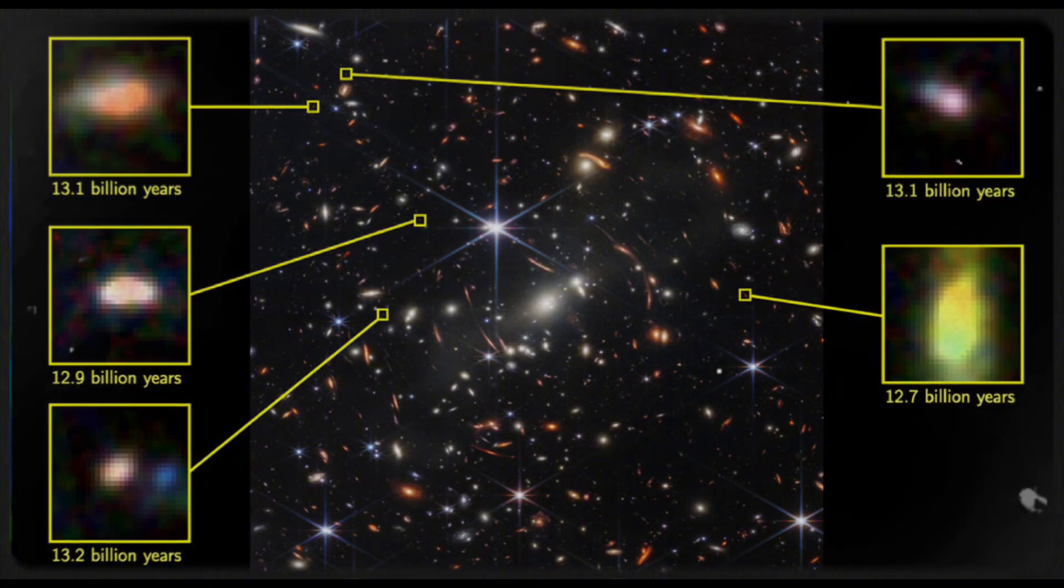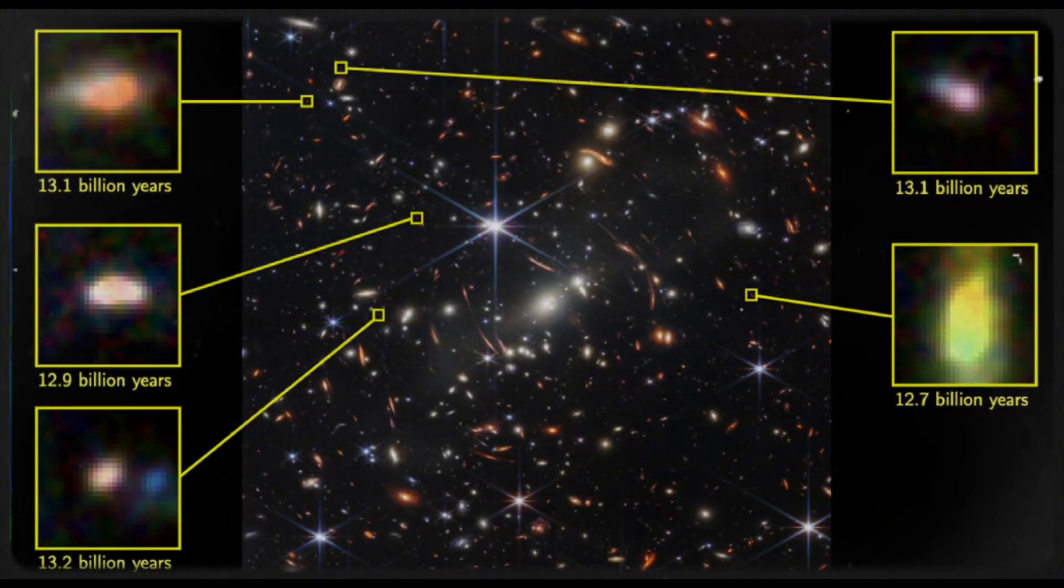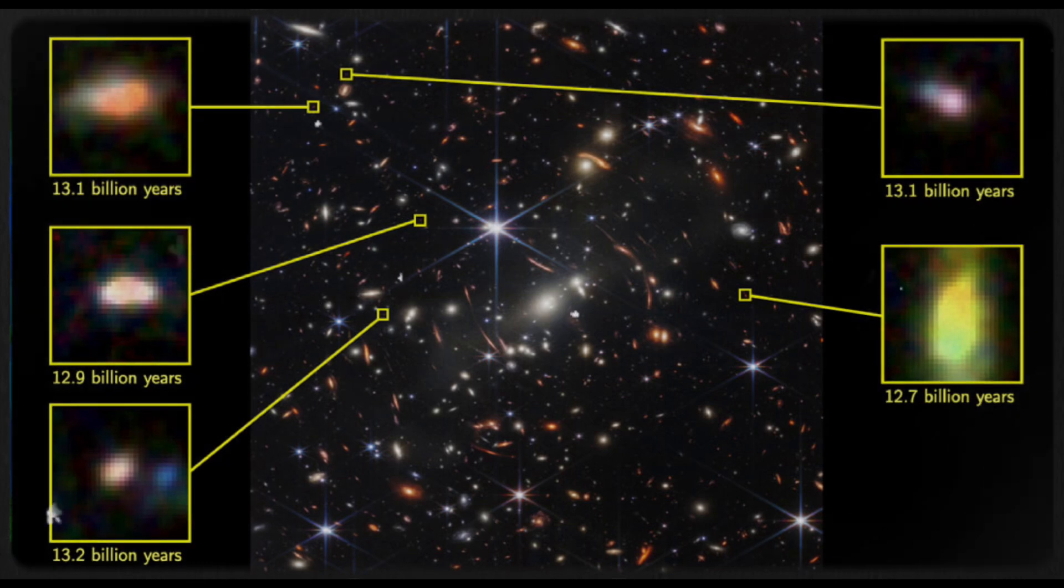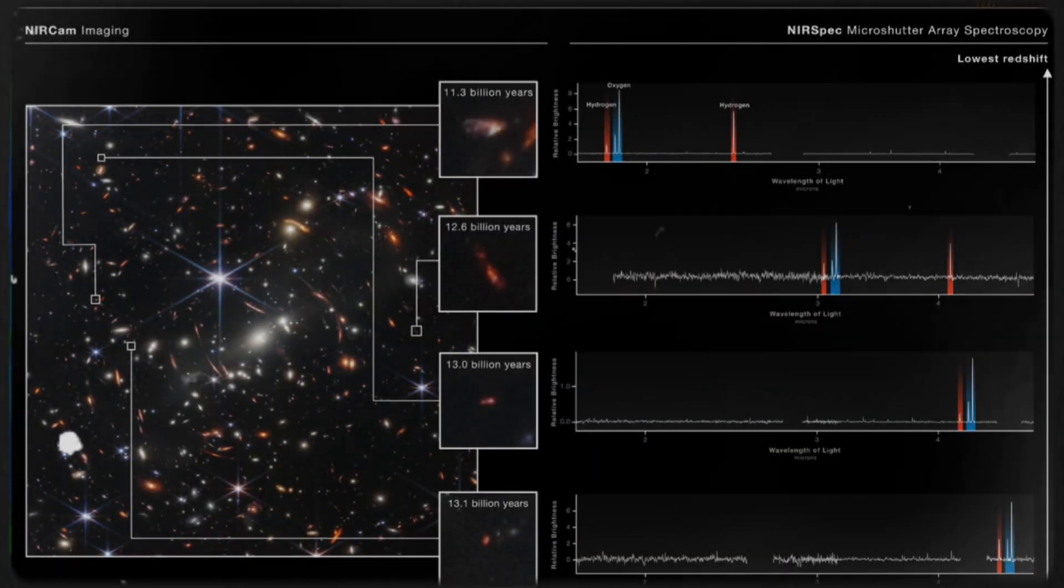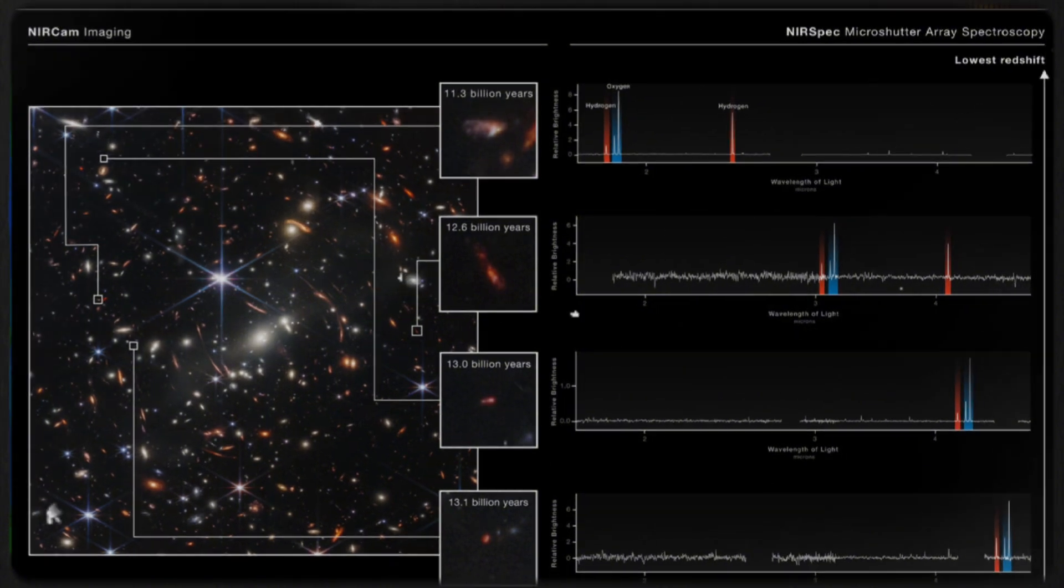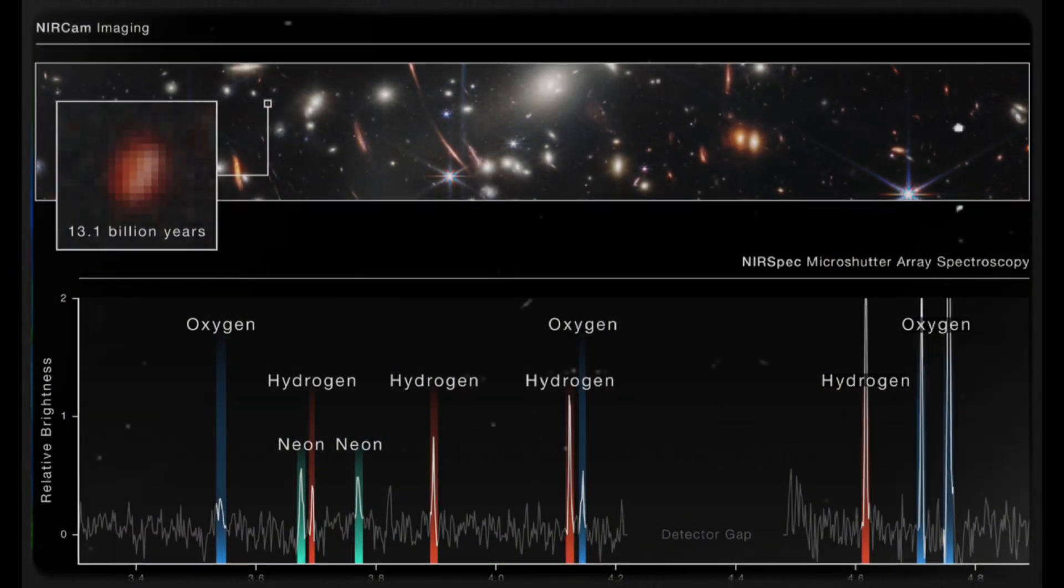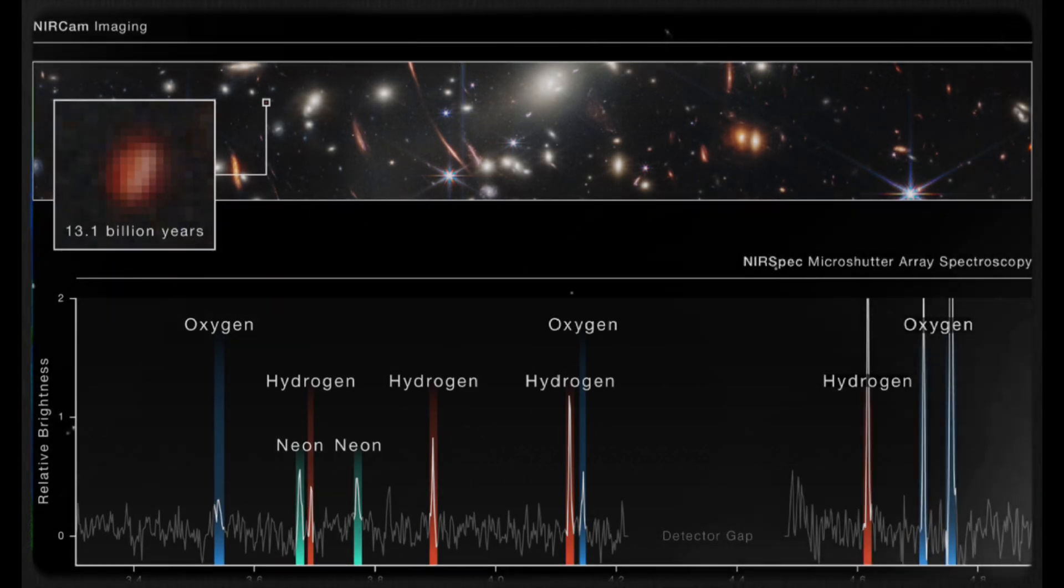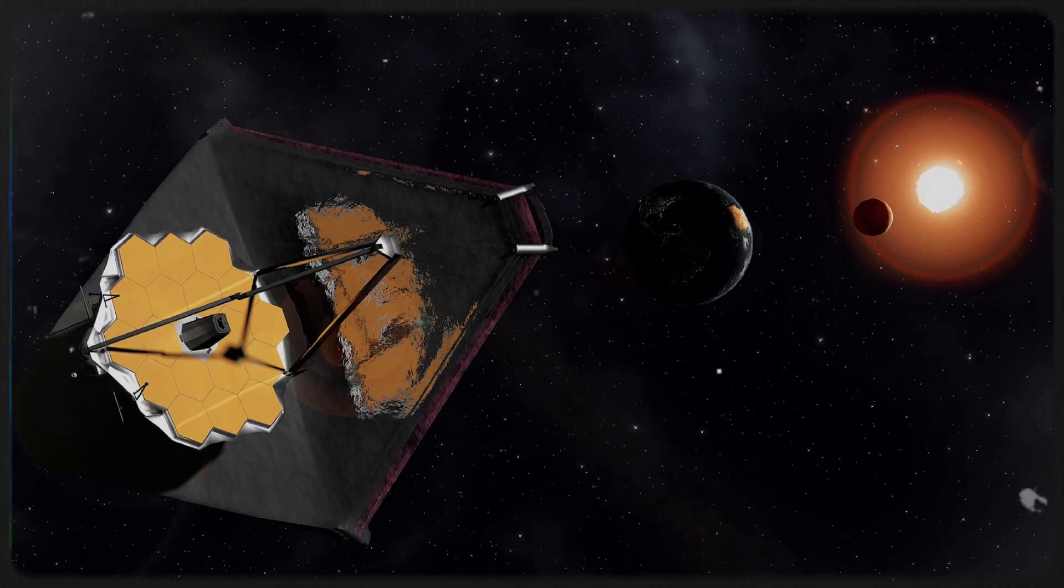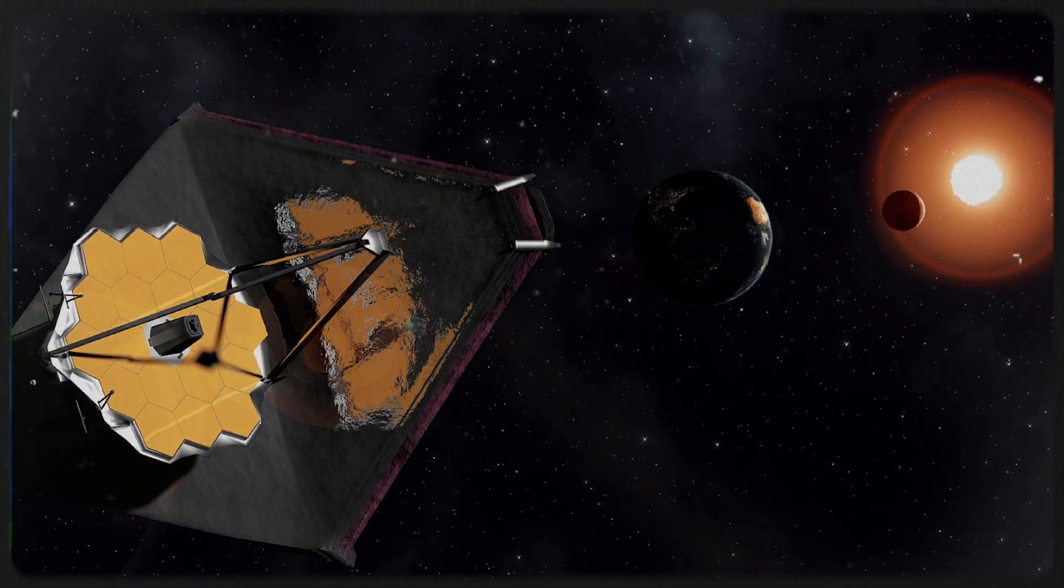However, upon further investigation, it became clear that these enormous galaxies appeared almost as if they were eager to be discovered. To truly understand why, how, and when galaxies formed, one of the most crucial techniques is to capture their spectra. This involves the process of splitting the light coming from these galaxies into its constituent colors, which allows scientists to identify various elements present within them and estimate their distances from Earth.